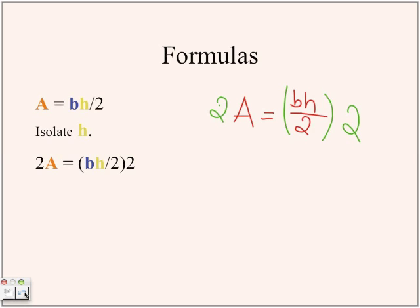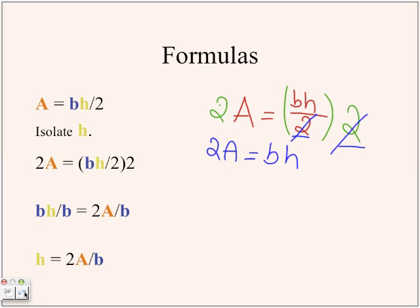Because you're dividing by 2, you multiply by 2, and doing that cancels it out. Now you only have 2A equals base times height. You want to have only h on one side, so you divide both sides by the base. Now you're left with h equals 2A divided by b.